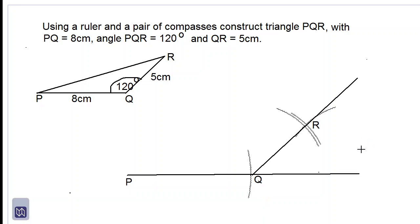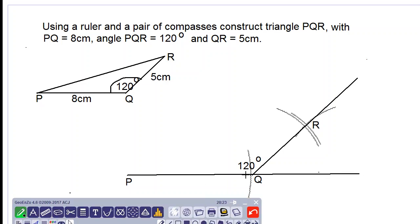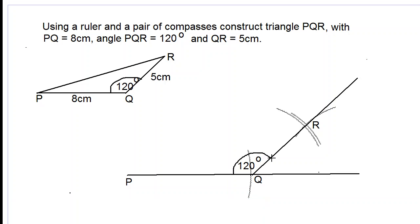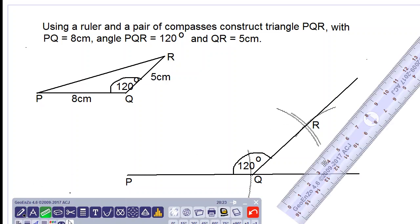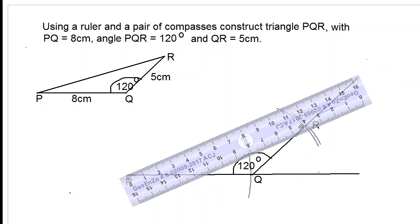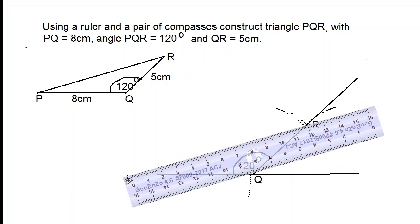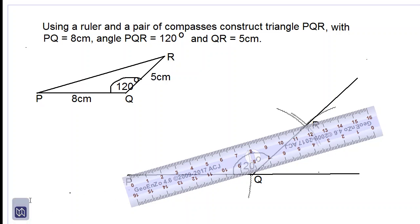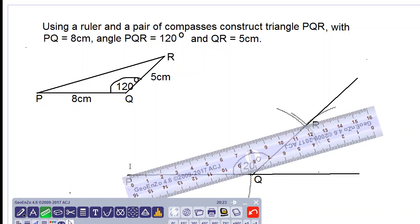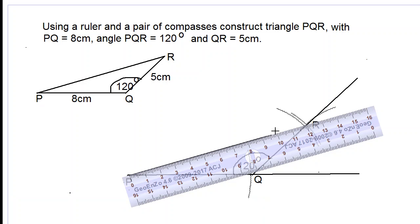Let's be careful. We now have an angle of 120 degrees over here. All we need to do now is draw a line which connects point P to point R. Take our ruler and draw the line.